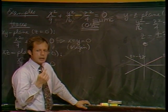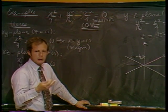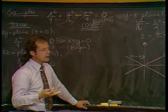If Z equals 2, you get X squared over 9 plus Y squared over 16 equals Z squared over 4, or 1. So if Z equals 2 in that plane, you get an ellipse.